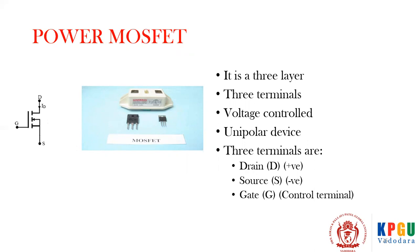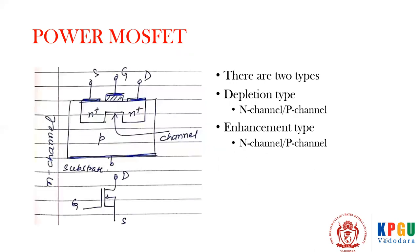Next in line is the power MOSFET. As you can see, it is a three-terminal device. It is a voltage-controlled and unipolar device. The three terminals are drain, source, and gate, where drain and source are generally used as positive and negative terminals while gate is the control terminal.